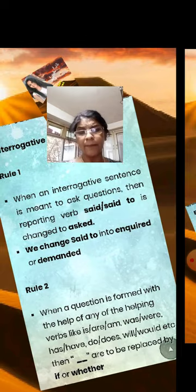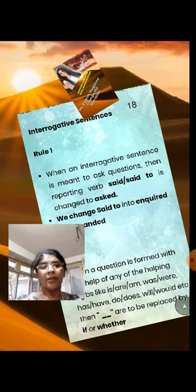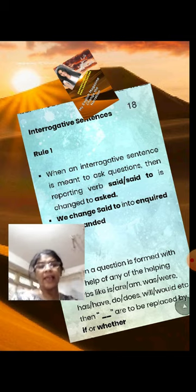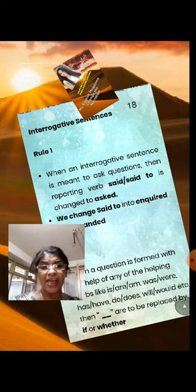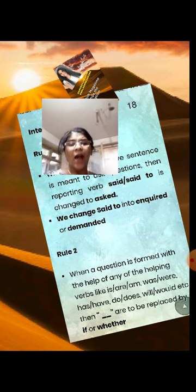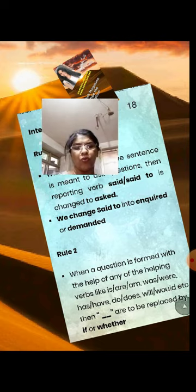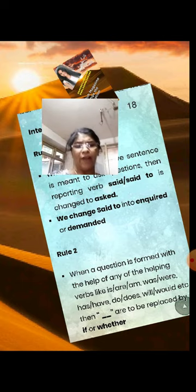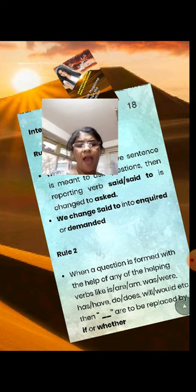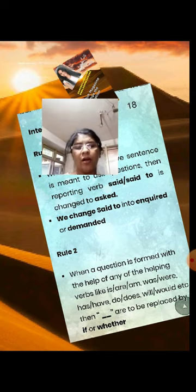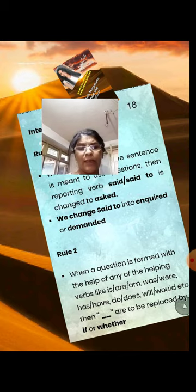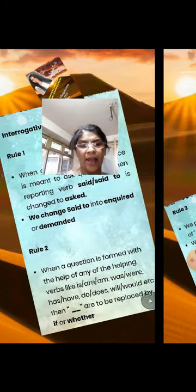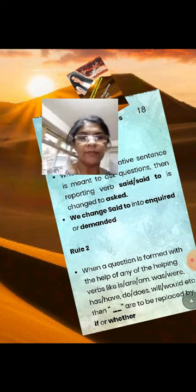An interrogative sentence is meant to ask a question. The reported verb 'said' or 'said to' is changed to 'asked'. We change 'said to' into 'inquired' or 'demanded'. Rule 2: When a question is formed with the help of any helping verb like is, are, am, was, were, has, have, do, does, will, would, etc., then it is to be reported by 'if' or 'whether'.